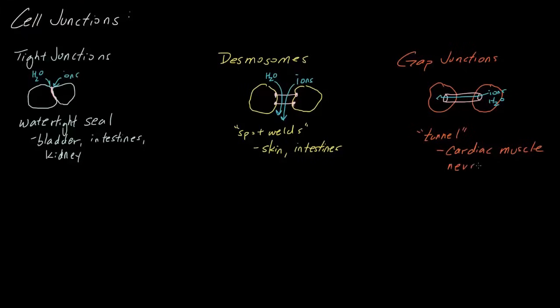In summary, we have three main types of cell junctions. The first are tight junctions, which are a watertight seal that prevents water or ions from flowing in between cells. We have desmosomes, which are our spot welds. The spot welds generally occur in areas of stress and allow water, ions, and other small molecules to flow between cells. And lastly are gap junctions, which are tunnels that connect cells. These tend to occur in cells that require propagation of electrical signals.